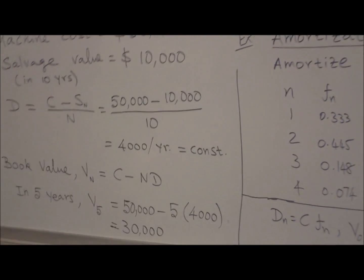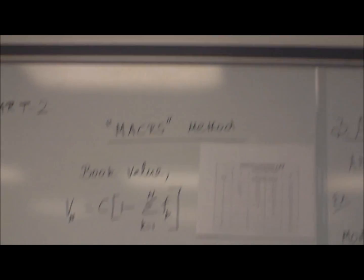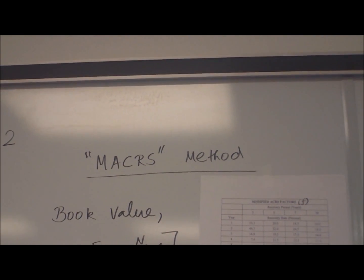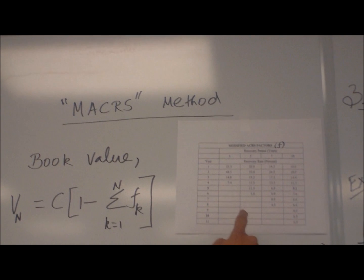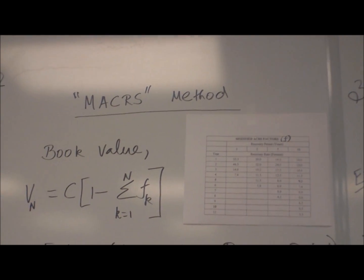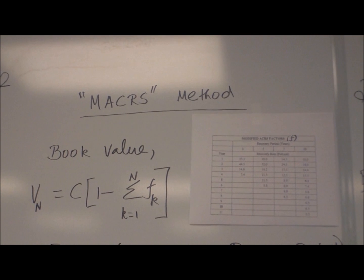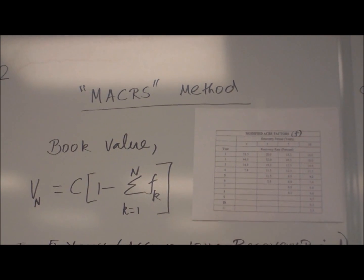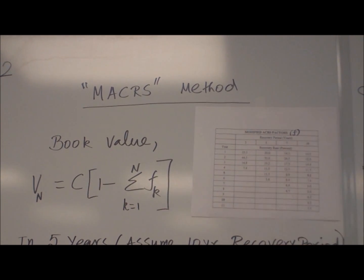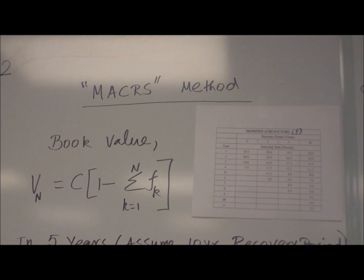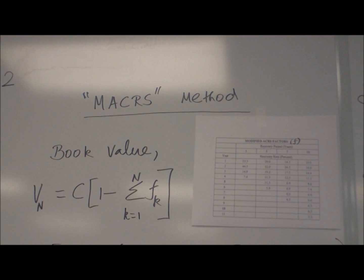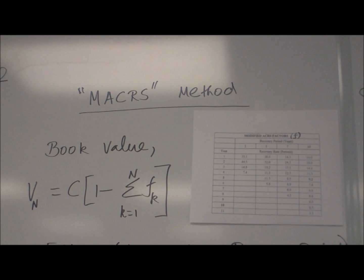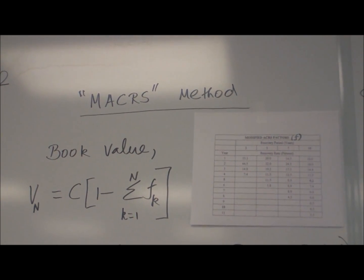Let us calculate the same book value by MACRS Method. To apply the MACRS Method, we need to have this table. This table is given in the handbook of the Fundamentals Engineering Exam. Here, 3, 5, 7, 10 represents number of years in which the entire value of the property will be recovered, so depreciated over 3 years or 5 years, 7 years or 10 years.